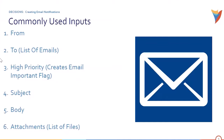Before we navigate into Decision Studio, let's understand the commonly used inputs for any kind of notification. These include: From, To (the list of emails or recipients to whom we'd like to address these notifications), High Priority (marking whether it is a high priority email or not), Subject, Body, and Attachments. We also have the ability to set up templates — for example, we can select email templates created for branding awareness.